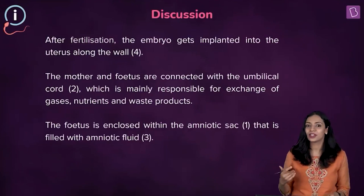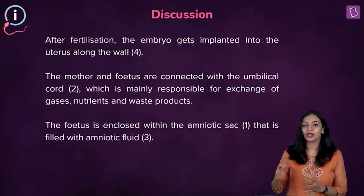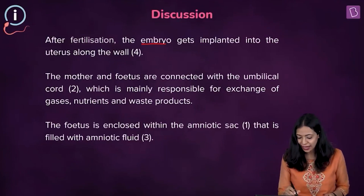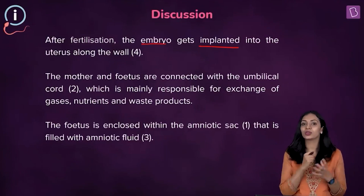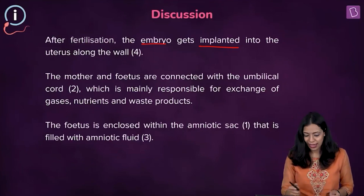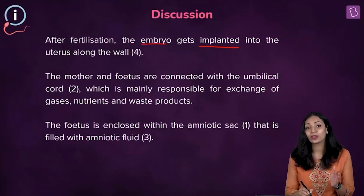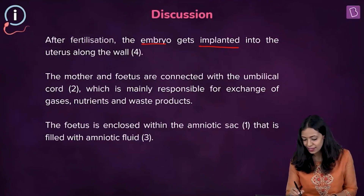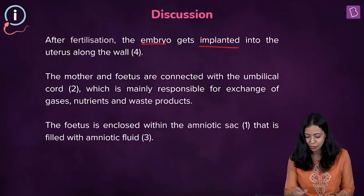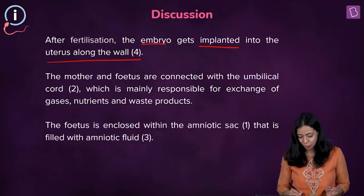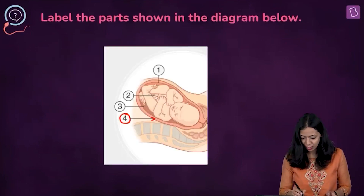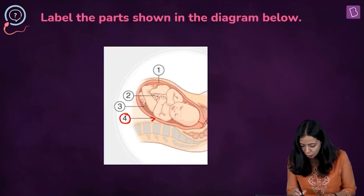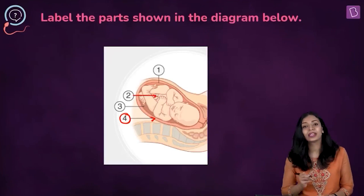After fertilization, the zygote develops into the embryo, and the embryo in the blastocyst stage gets implanted or embedded into the wall of the endometrium, which is a layer present in the wall of the uterus. Label four represents the uterine wall, and label two represents the umbilical cord.